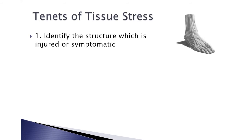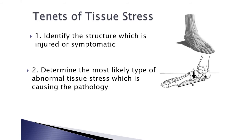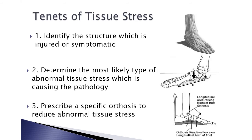Thanks to Tom McPoyle — I do recommend you read his paper. Let's look at the tenets of tissue stress theory. The first thing is to identify the structure that's injured or symptomatic — let's say the plantar fascia. Then determine what's most likely the type of abnormal tissue stress causing the pathology. With plantar fasciosis or plantar fasciitis, it's tension on that fascia. Next, prescribe an orthotic device that's going to reduce that abnormal tissue stress. I would refer you to our webinar on plantar fasciitis treatment with orthotic therapy to see how to do that and to review studies showing the most effective way to accomplish it.